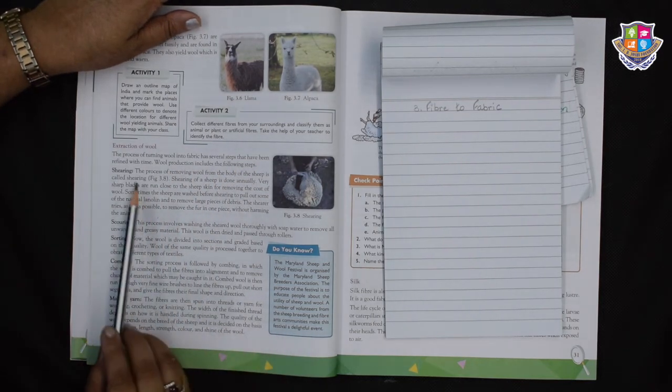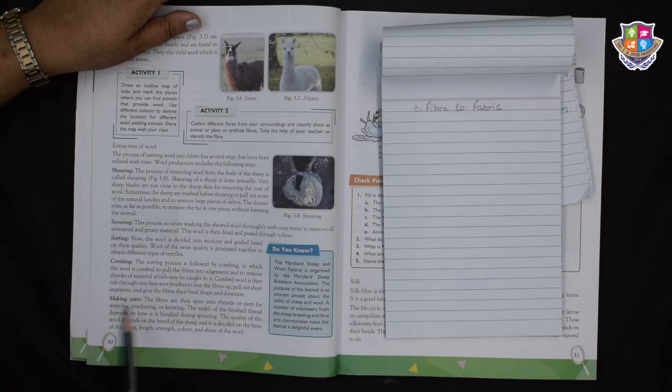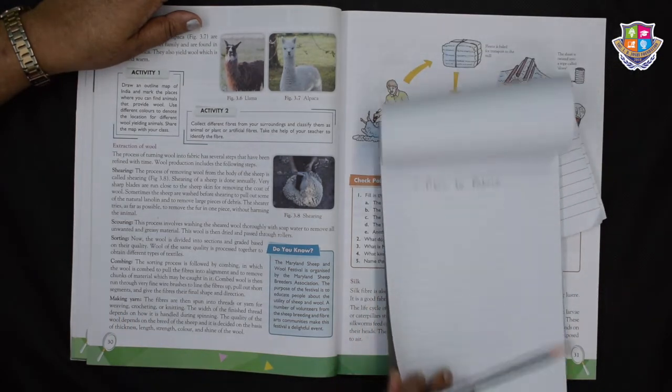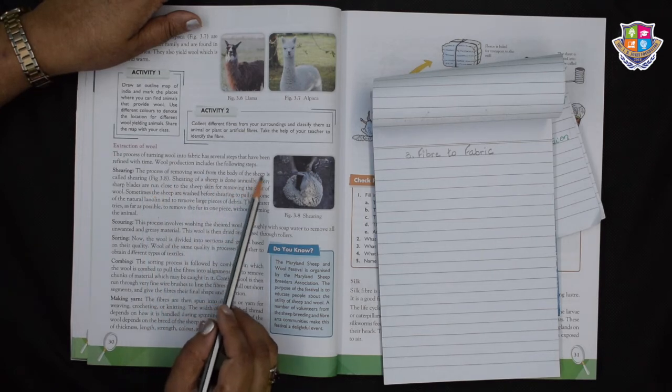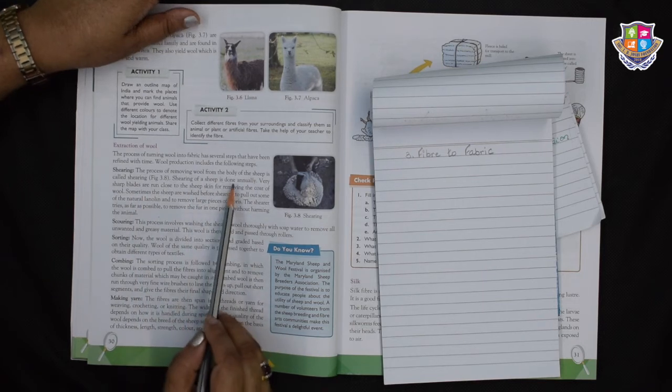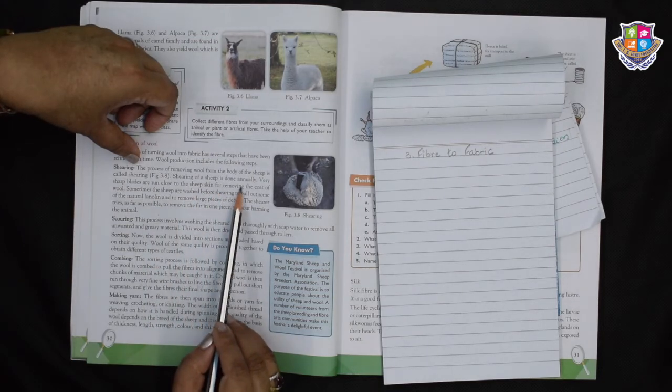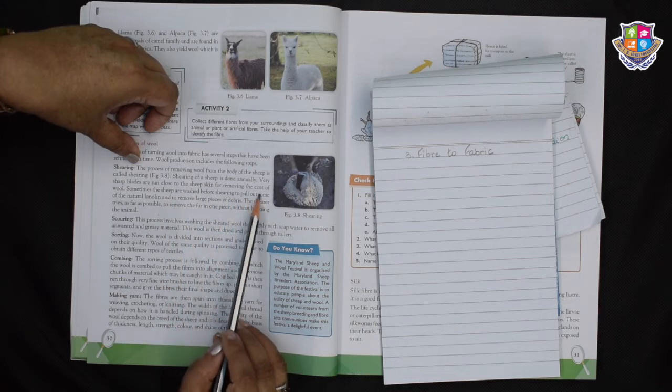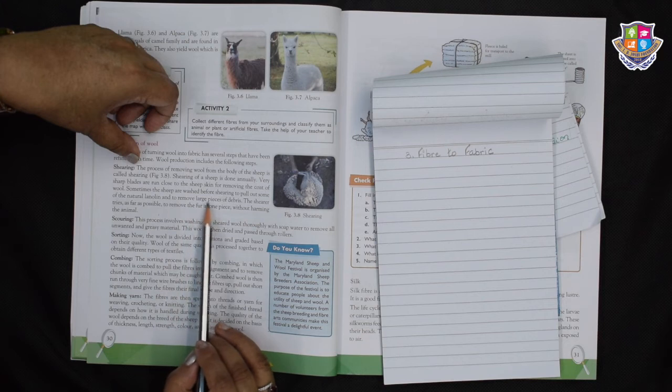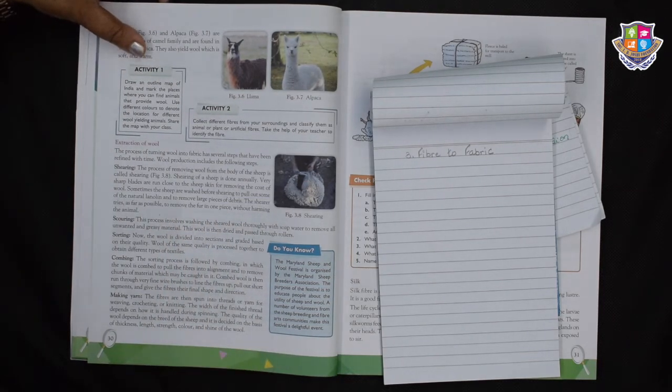Wool production includes the following steps: shearing, scouring, sorting, combing, and making yarn. The process of removing wool from the body of the sheep is called shearing. Shearing of a sheep is done annually. Very sharp blades are run close to the sheep skin for removing the coat of wool. Sometimes the sheep are washed before shearing to pull out some of the natural lanolin and to remove large pieces of debris. The shearer tries as far as possible to remove the fur in one piece without harming the animal.